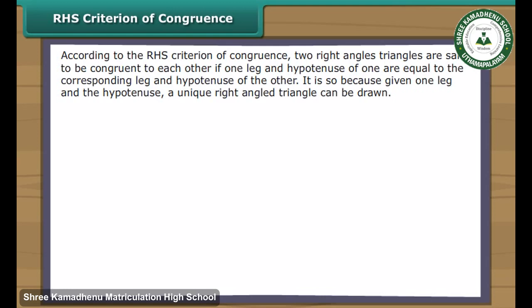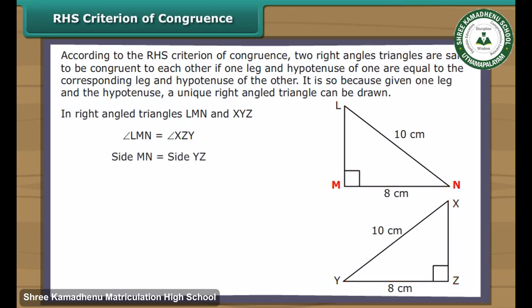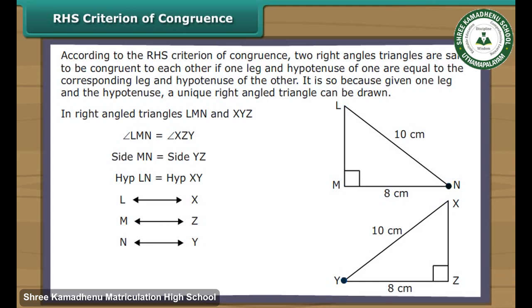RHS criterion of congruence: according to the RHS criterion, two right-angled triangles are said to be congruent to each other if one leg and the hypotenuse of one are equal to the corresponding leg and hypotenuse of the other. It is so because, given one leg and the hypotenuse, a unique right-angled triangle can be drawn. In right-angled triangles LMN and XYZ, angle LMN equals angle XYZ, side MN equals side YZ, and hypotenuse LN equals hypotenuse XY. Vertex L corresponds to vertex X, vertex M to vertex Z, vertex N to vertex Y. Therefore, triangle LMN is congruent to triangle XYZ.